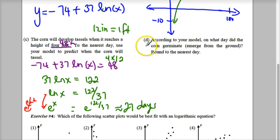According to your model, on what date did the corn germinate? When did it germinate? It germinated when this equation is equal to 0. Excellent. So now, what am I going to get? 37 ln of x is equal to 74.